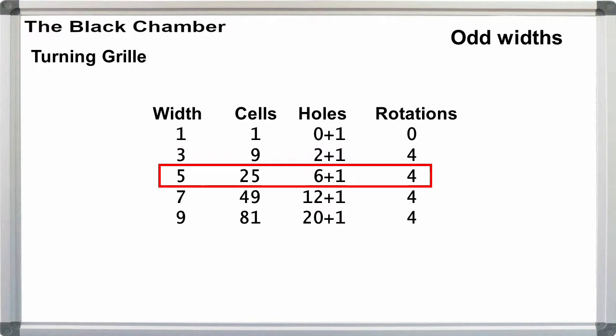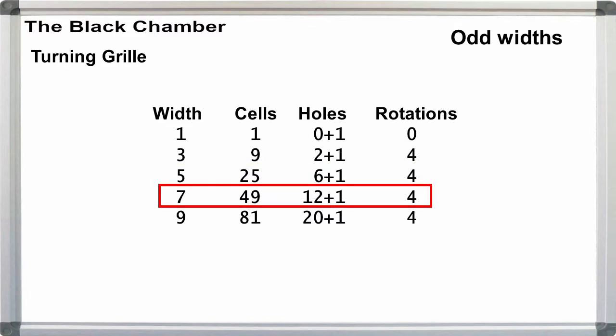For a width of 5, 25 cells, 6 plus 1 holes. For width 7, 49 cells, 12 plus 1 holes. And for a width of 9, we have 81 cells, and 20 plus 1 holes.